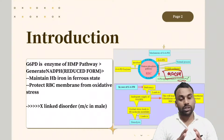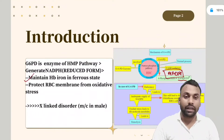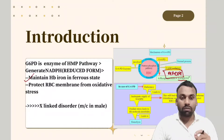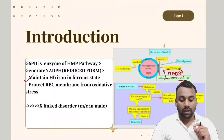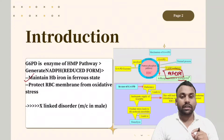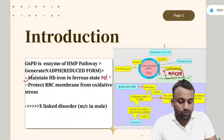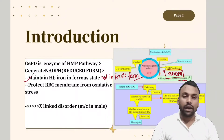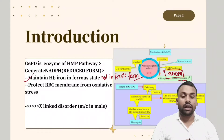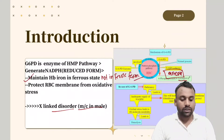NADPH is responsible for maintaining the iron in hemoglobin in the ferrous state — keeping iron in the ferrous form, not the ferric form. It also protects from several types of oxidative damage. G6PD deficiency is an X-linked disorder and is most commonly seen in males.